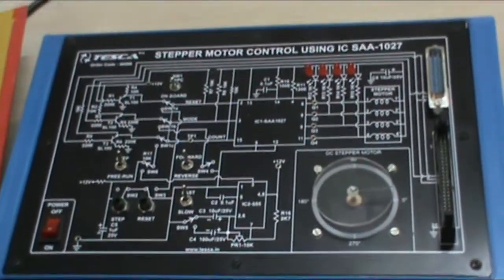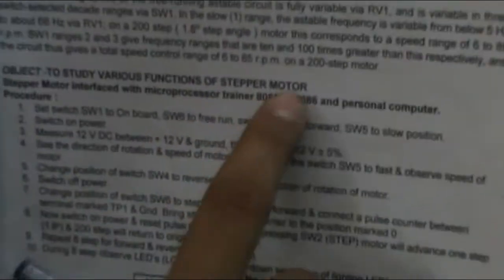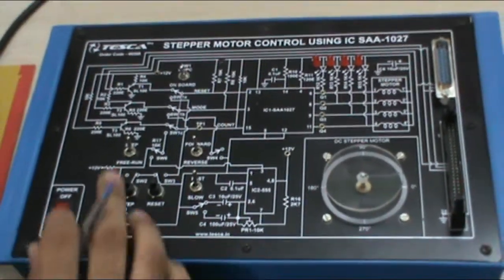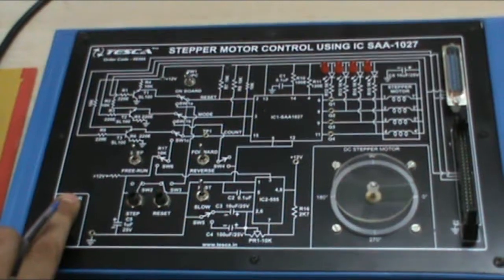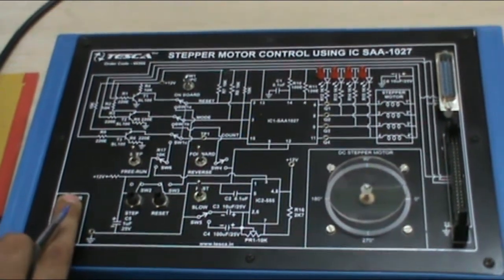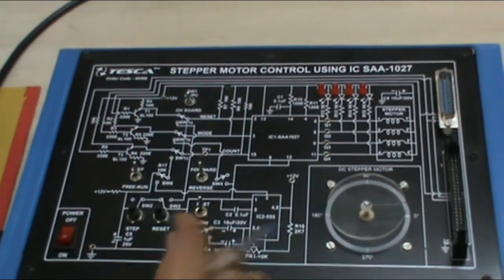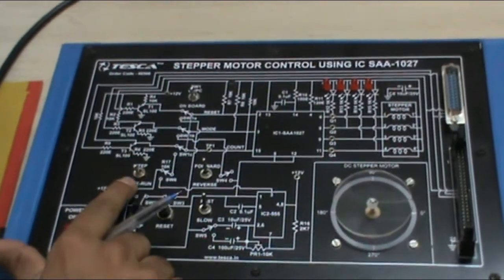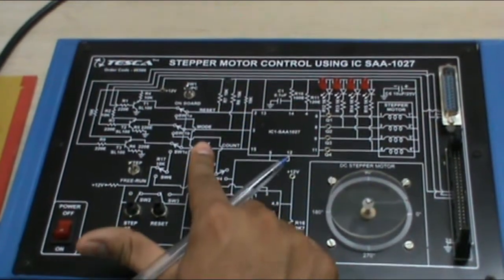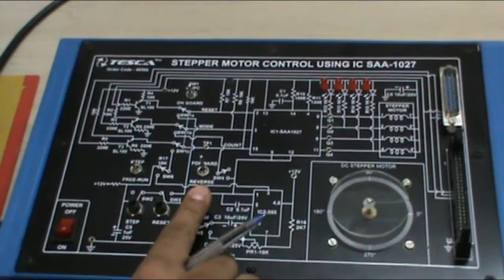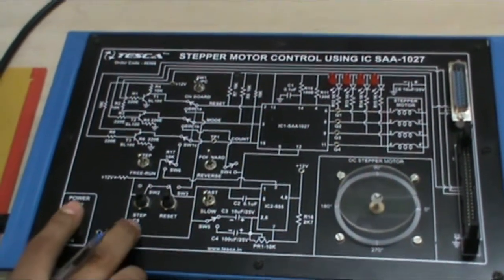Now first let me take you to the experiments. Experiment number one is to study various functions of stepper motor. For this, first we have to do these settings before switching on the mains. First set switch SW1 to on-board position, then SW6 to free run, SW4 to forward position, SW5 to slow. Now switch on the mains.